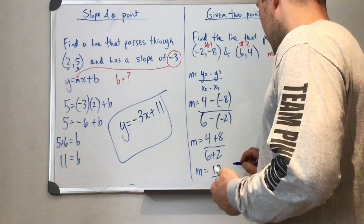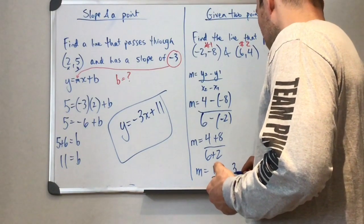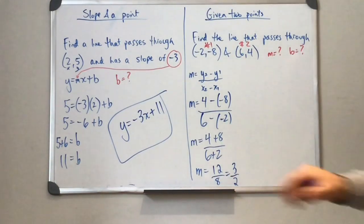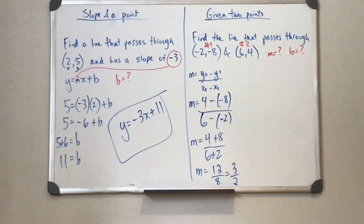We end up with a slope of 12 over eight, which is the same as three over two. Okay. So if I divide both of those by four, we can reduce our fraction to three halves.